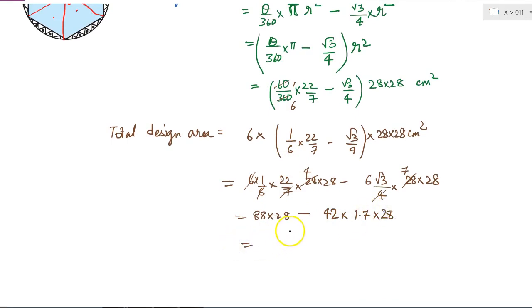So if I take 28 common, I am just trying to minimize my calculations. I will get 28 into 88 minus 42 into 1.7.